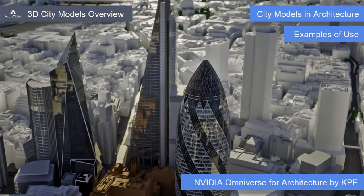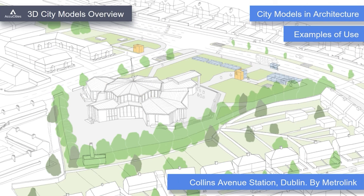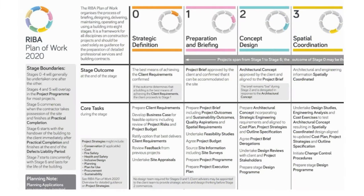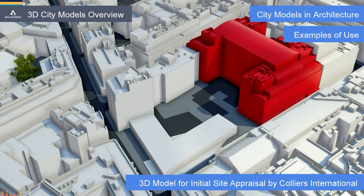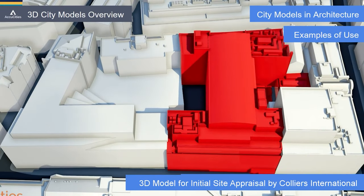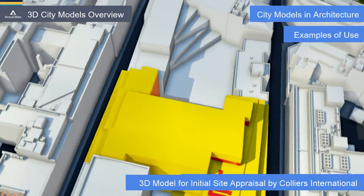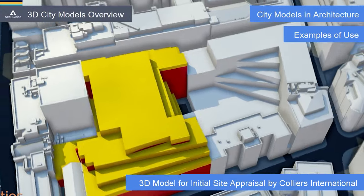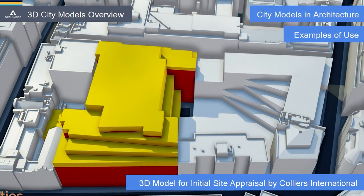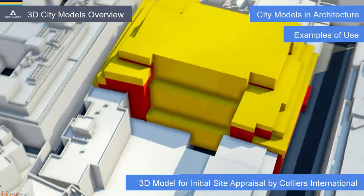It is necessary for architects to understand the spatial context of a development. Architects usually take advantage of existing 3D city models or commission or even create their own 3D model of the surrounding area. Our RIBA Plan of Work has been updated in 2020. It is a task of Stage 1 to source site information and survey, and 3D models of the as-built environment are often already used in Stage 0 for the initial site appraisal. Although architects are rarely involved in Stage 0, the project might inherit the 3D models sourced for the site appraisal task. Stage 1 instructs project managers to source site information including site survey to avoid the use of low-quality site models.